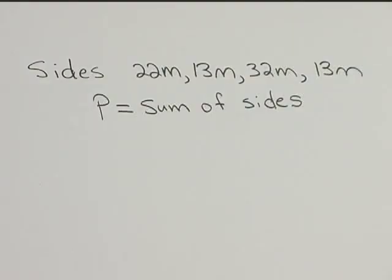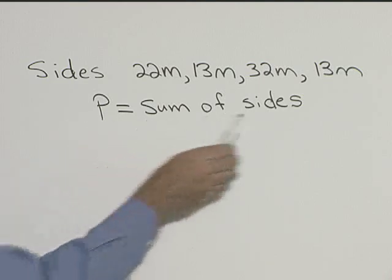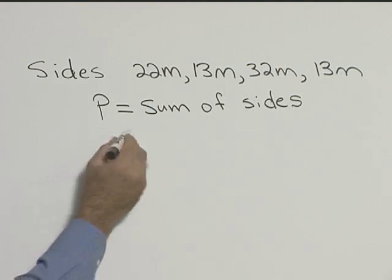For this problem, let's find the perimeter of a trapezoid with sides measuring 22 meters, 13 meters, 32 meters, and 13 meters. The perimeter of a trapezoid is simply the sum of the sides.